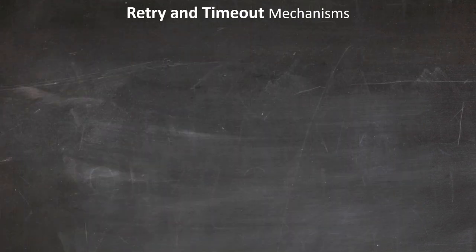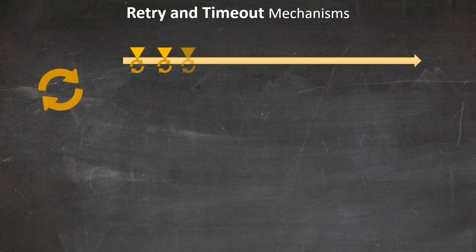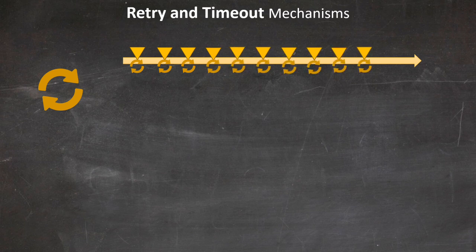Let's now explore retry and timeout mechanisms — essential tools in our resiliency toolkit. In distributed systems, transient failures are common. A service might be temporarily unavailable due to network issues or high load. This is where retry mechanisms come in. When a request fails, instead of immediately returning an error, the system attempts the request again. However, we need to be smart about retries — retrying every X seconds isn't a good strategy, as retrying too often increases load on the server, potentially contributing to further degradation.